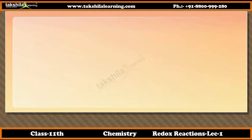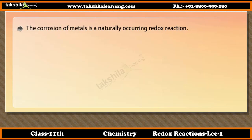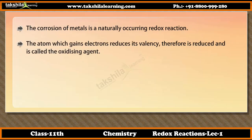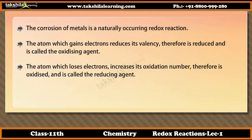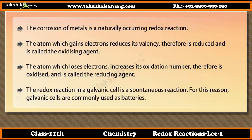Did you know? The corrosion of metals is a naturally occurring redox reaction. The atom which gains electrons reduces its valency and is therefore reduced, and is called the oxidizing agent. The atom which loses electrons increases its oxidation number and is therefore oxidized, and is called the reducing agent. The redox reaction in a galvanic cell is a spontaneous reaction; for this reason, galvanic cells are commonly used as batteries.